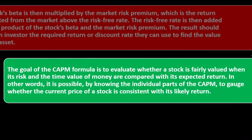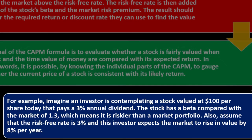In other words, by knowing the individual parts of the CAPM, you can gauge whether the current price of a stock is consistent with its likely return. For example, imagine an investor contemplating a stock valued at $100 per share today that pays a 3% annual dividend. The stock has a beta of 1.3 compared to the market, meaning it is riskier than a market portfolio. Assume the risk-free rate is 3%, accounting for the time value of money — think of it like inflation — and the investor expects the market to rise by 8% per year.